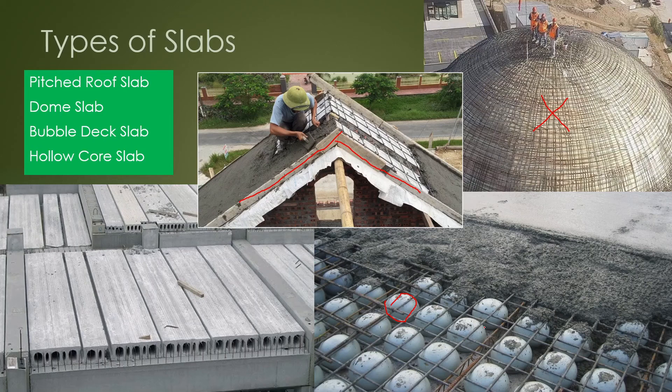Hollow core slabs are a kind of precast slab. Similar to the bubble deck concept, instead of casting a full thick solid plate, the middle section is hollow to save material. These precast units are placed onto supports and the joints are completed to form a continuous slab.